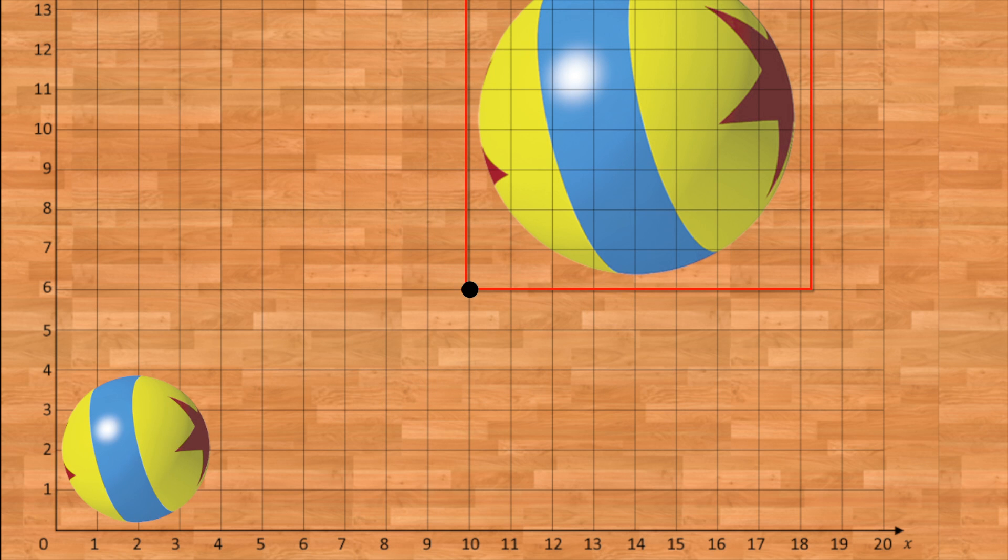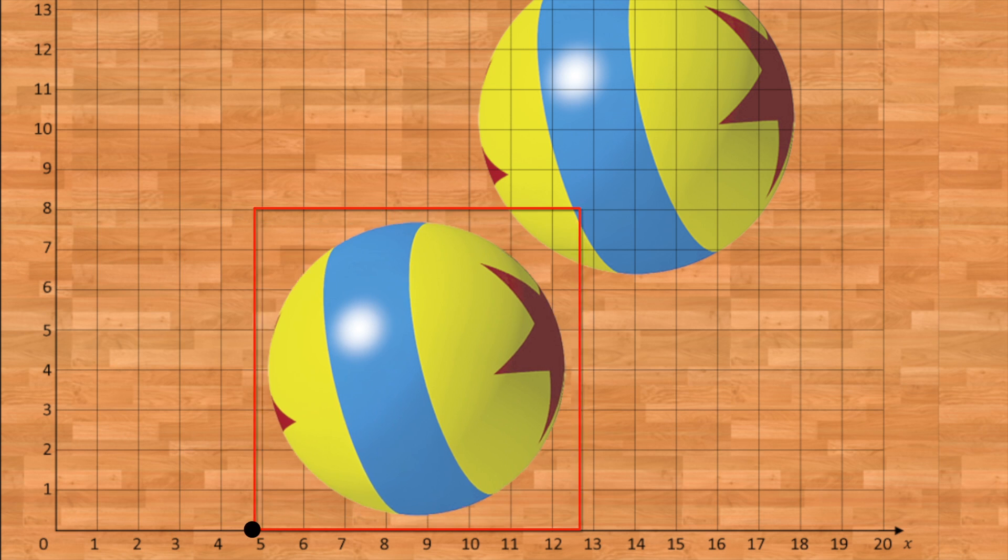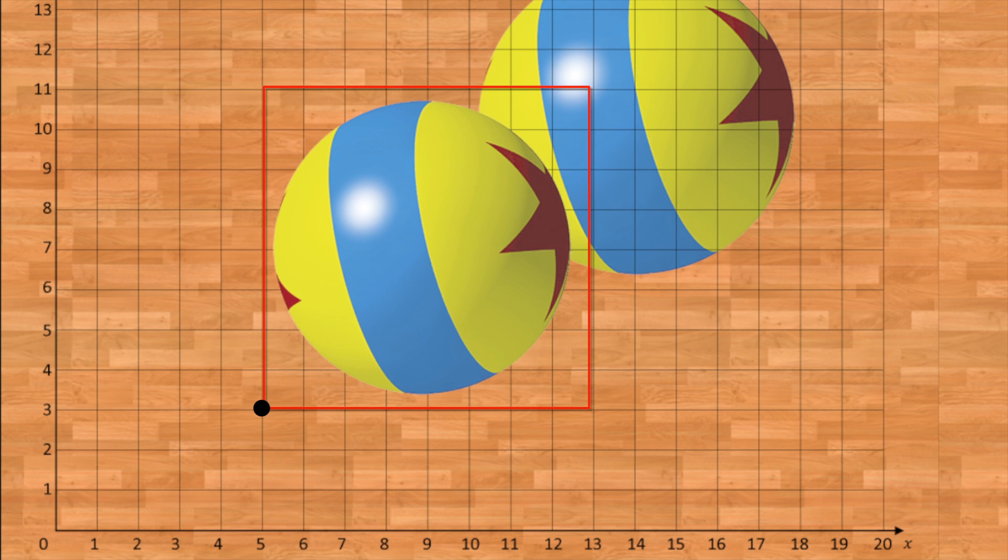But what if I change the order and do scaling before translation? In this case, I'll scale by a factor of 2 and then translate by 5 in x and 3 in y. Huh, I get a different result.